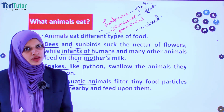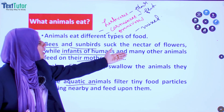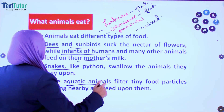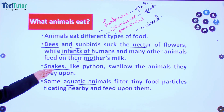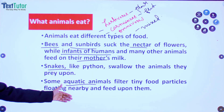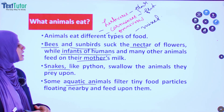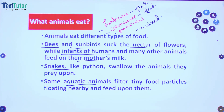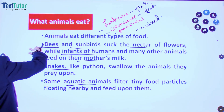So we understood that animals have different categories of food and not all animals eat similarly. Bees and sunbirds feed on nectar of flowers, infants of humans feed on mother's milk, snakes like pythons swallow animals they prey upon, and some aquatic animals filter tiny food particles floating nearby and feed upon them.